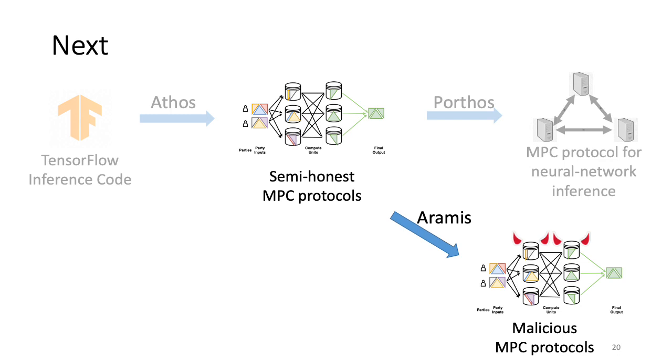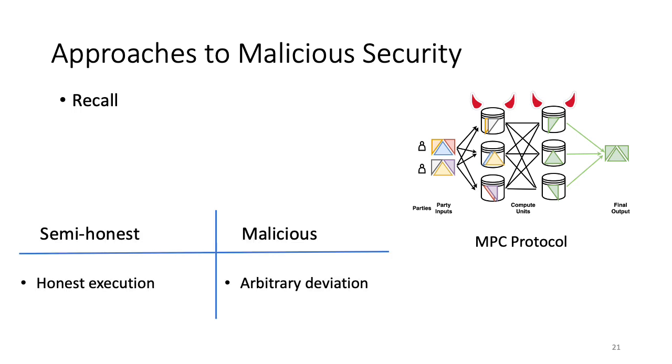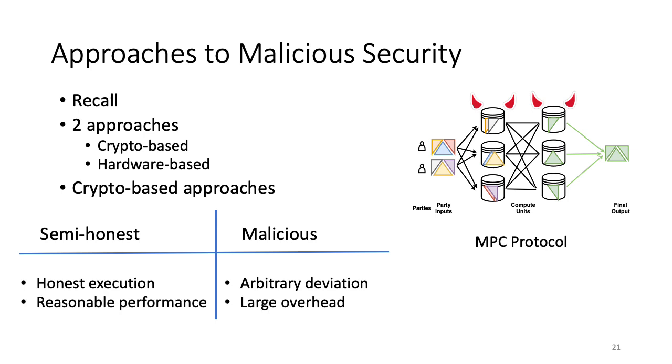We now move to Aramis, our final component which provides a general technique to get malicious secure MPC protocols that are quite efficient in practice. Recall from earlier slides that unlike semi-honest MPC protocols, malicious secure protocols allow for arbitrary adversarial behavior. One can typically get malicious security in two ways, crypto-based and secure hardware-based approaches. Crypto-based approaches use secure cryptographic primitives to design protocols for achieving the desired level of security. In practice, for semi-honest security, they achieve reasonable performance. But for malicious security, while some techniques for specific protocols can have reasonable overhead, general techniques that work for arbitrary protocols come with a large overhead.